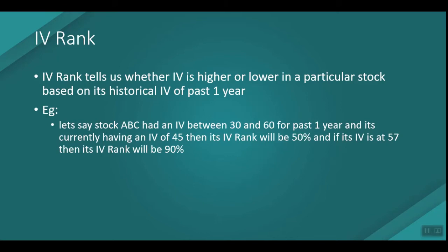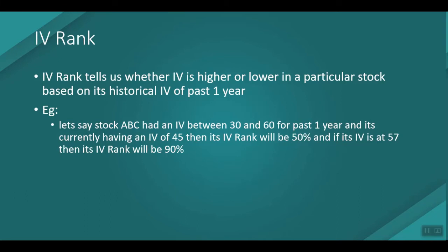For example, assume stock ABC had an IV range between 30 and 60 for the past one year and is currently at an IV of 45. Its IV Rank will be 50%, because 45 sits at the midpoint between 30 and 60. If its IV is at 57, then its IV Rank will be 90%, which is considered a high IV.